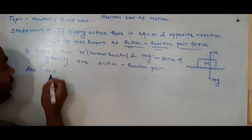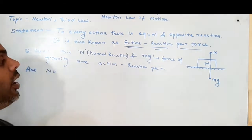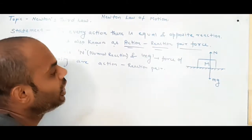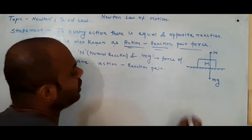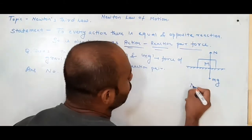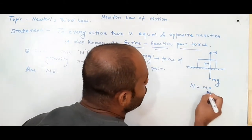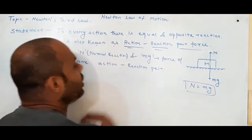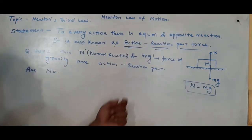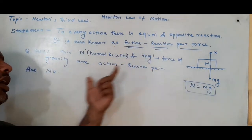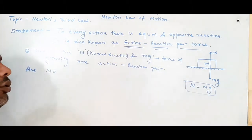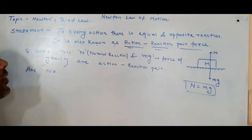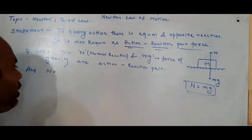You might say these are equal and opposite forces — and that is absolutely correct, they are equal and opposite forces, which is why we say N equals mg. But we make a misconception by calling them an action-reaction pair. There are some rules for action-reaction pair forces, let us understand those.